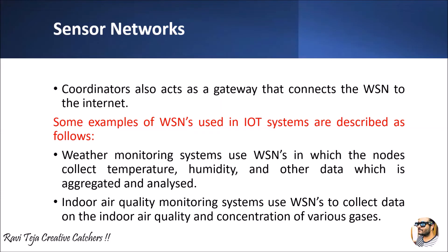Now let's look at some wireless sensor network applications used in IoT systems. Take the example of a weather monitoring system — using wireless sensor networks with the help of several sensors and nodes, we collect parameters like temperature, humidity, and other data which are aggregated and analyzed. Another application is indoor air quality monitoring, where we can monitor what types of gases are present in the air and how much purity exists, using sensors.